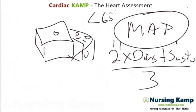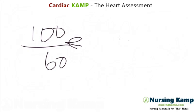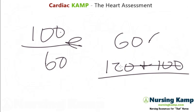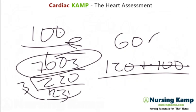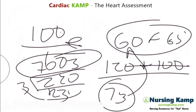That mean arterial pressure needs to be greater than 65 — or 60 to 65, you'll see that as well. If it is greater than 65, they are perfusing and we're good to go. Let's run through it: blood pressure of 100 over 60. 60 times 2 (diastolic times 2) is 120, plus systolic which is 100 — that equals 220, divided by 3 equals 73. So mean arterial pressure is 73, which is greater than 65, which means they are perfusing.